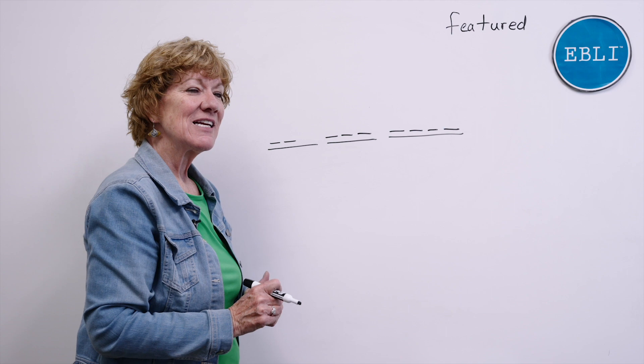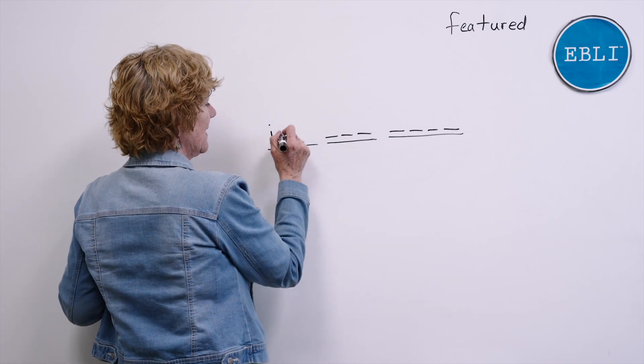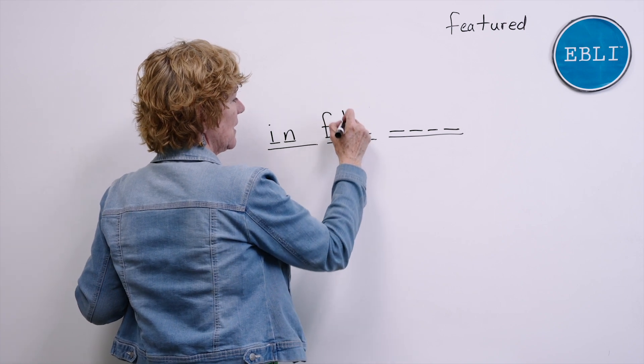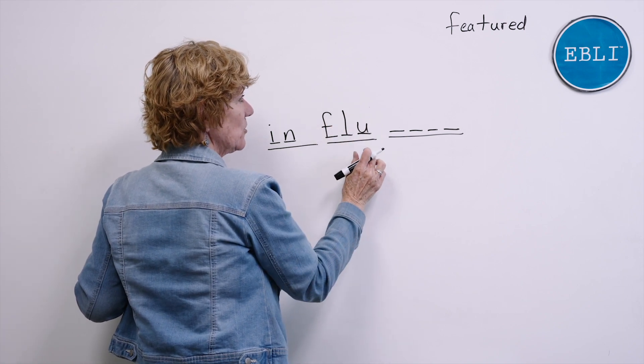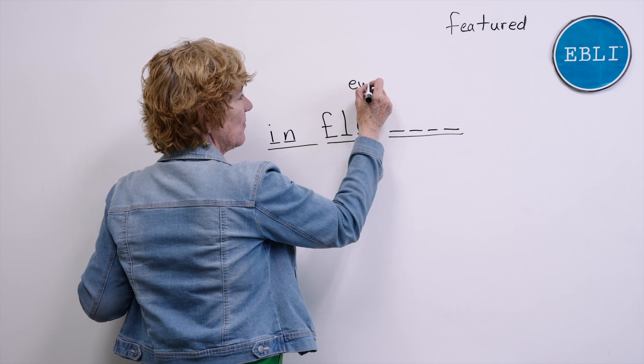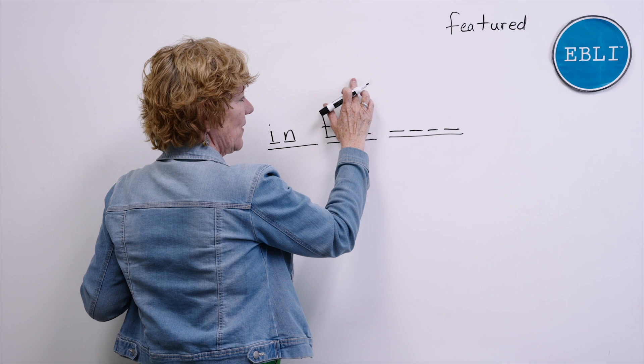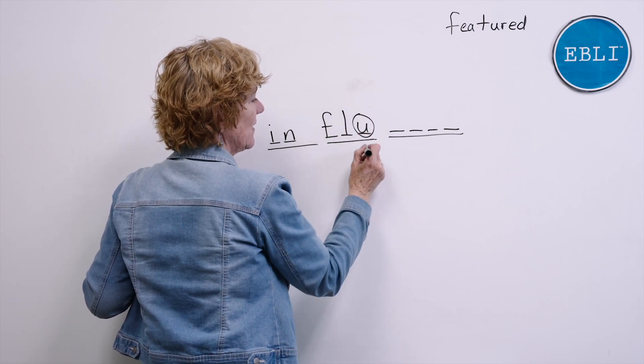Okay. You ready? Now say the sounds as I write and you can check it. I. N. In. Flew. F. L. U. So here's your U spelling. Now if you did this like the bird flew in the air, that makes sense. But not in this word in the middle there. This is your U. So if you had a different one, erase, change, circle one line under it.